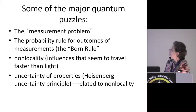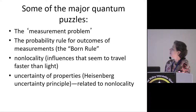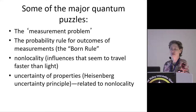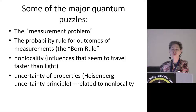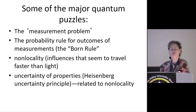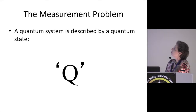Just a quick overview of some of the major quantum puzzles: the so-called measurement problem, the probability rule for outcomes of measurements called the Born rule, named after Max Born, and non-locality — influences that seem to travel faster than light. Also, the Heisenberg uncertainty principle: if you ascertain a quantum system's position, its momentum is completely uncertain, and vice versa. If you know its momentum to a very high degree of accuracy, you have no idea where it is — it's kind of spread out all over the place, and in that sense it's non-local.